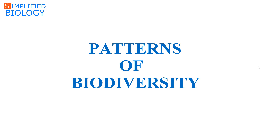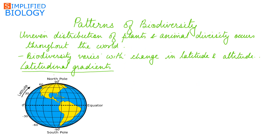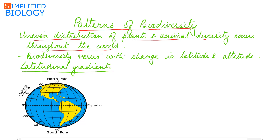Welcome to Simplified Biology. Today's topic is patterns of biodiversity. There is an uneven distribution of plants and animal diversity throughout the world. Biodiversity varies with the change in latitude and even with a change in altitude.